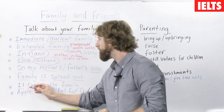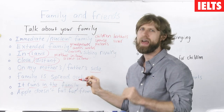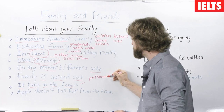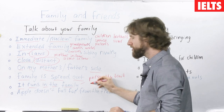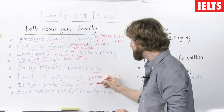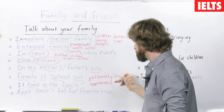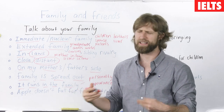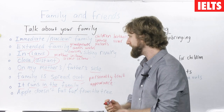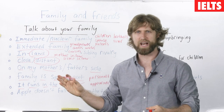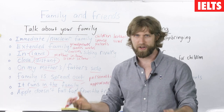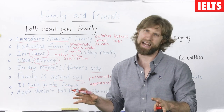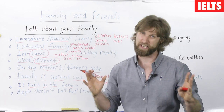It runs in the family. That means it is usually a personality trait or something pertaining to your appearance. For example, if someone says your family gets very angry often, you can answer: well, yes, it runs in the family. On my mother's side of the family everyone gets annoyed very quickly, but on my father's side everyone is really relaxed. So I got a little bit of each of them.